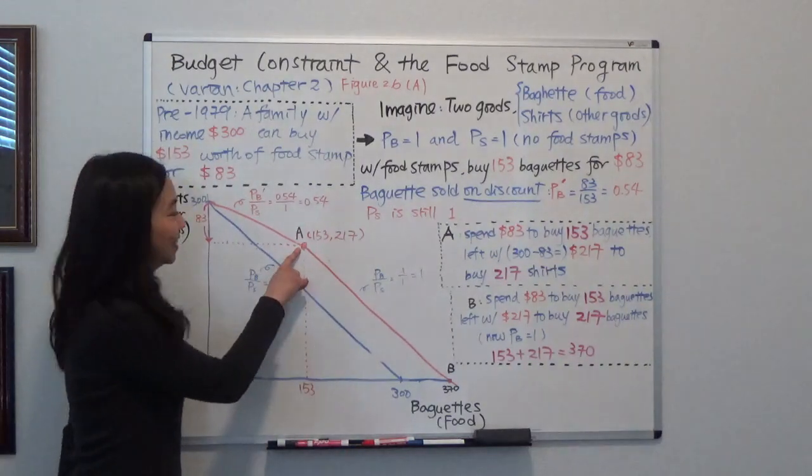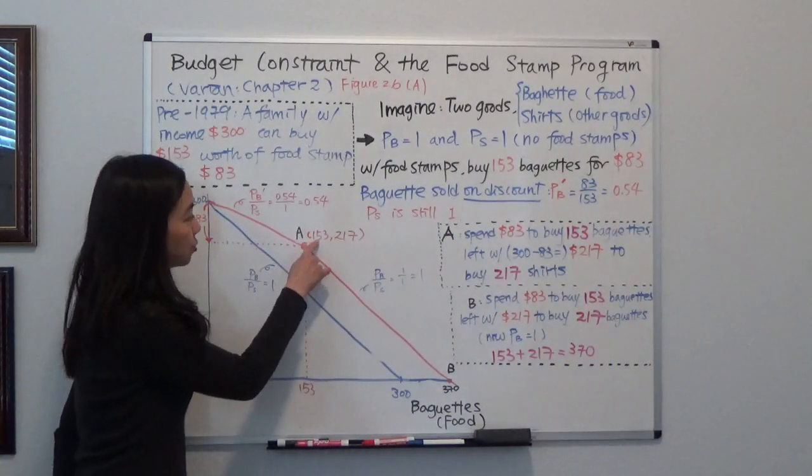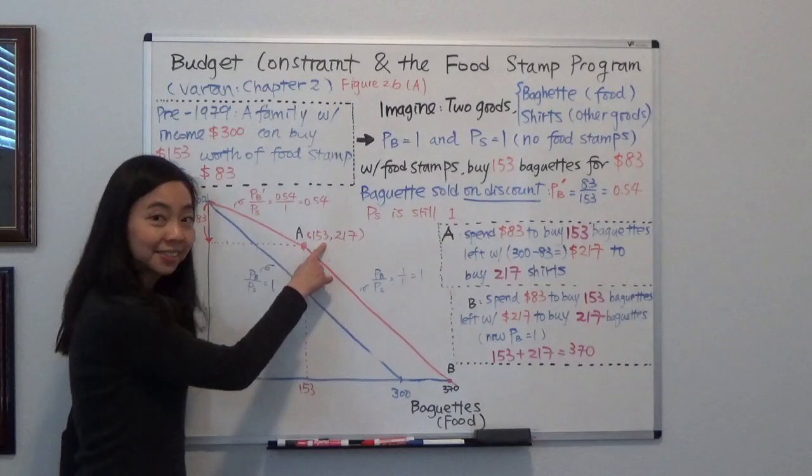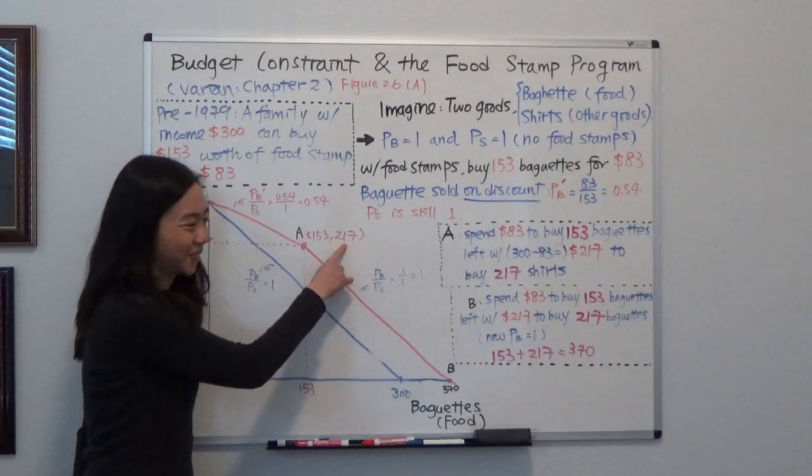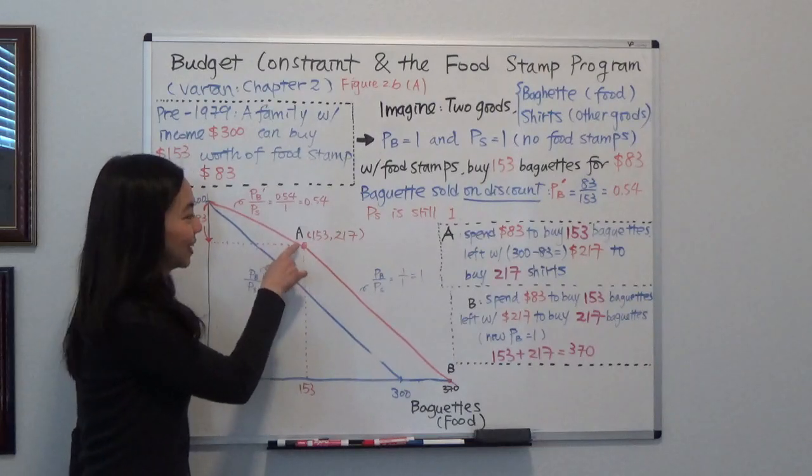So this point, point A, is that you have 153 baguettes and you also consume 217 t-shirts. So that's point A. That's a kink.